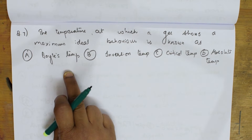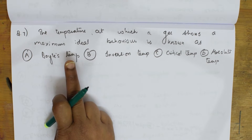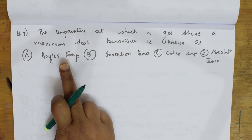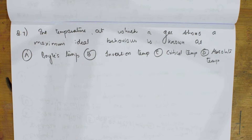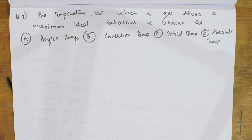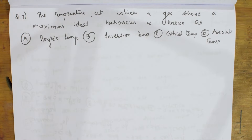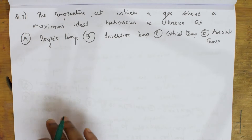Boyle's temperature is the temperature at which a real gas exhibits ideal behavior for a considerable range of pressures. Let's come back and do the next question. They say: the temperature at which a gas shows maximum ideal behavior is known as — and they have given us four options.